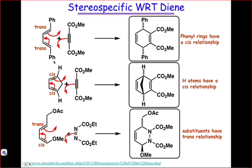The reaction is also stereospecific with respect to the diene. This means that if the substituents on both double bonds of the diene had the same stereochemical relationship, then the substituents will end up cis in the product. Here we see a diene with two trans double bonds, and the two phenyl groups end up cis in the product because both double bonds are trans.